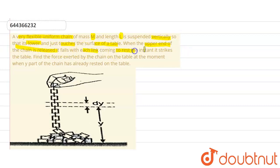with each link coming to rest at the instant it strikes the table. This means when we release the upper end of the chain, each link comes to rest as soon as it reaches the ground.